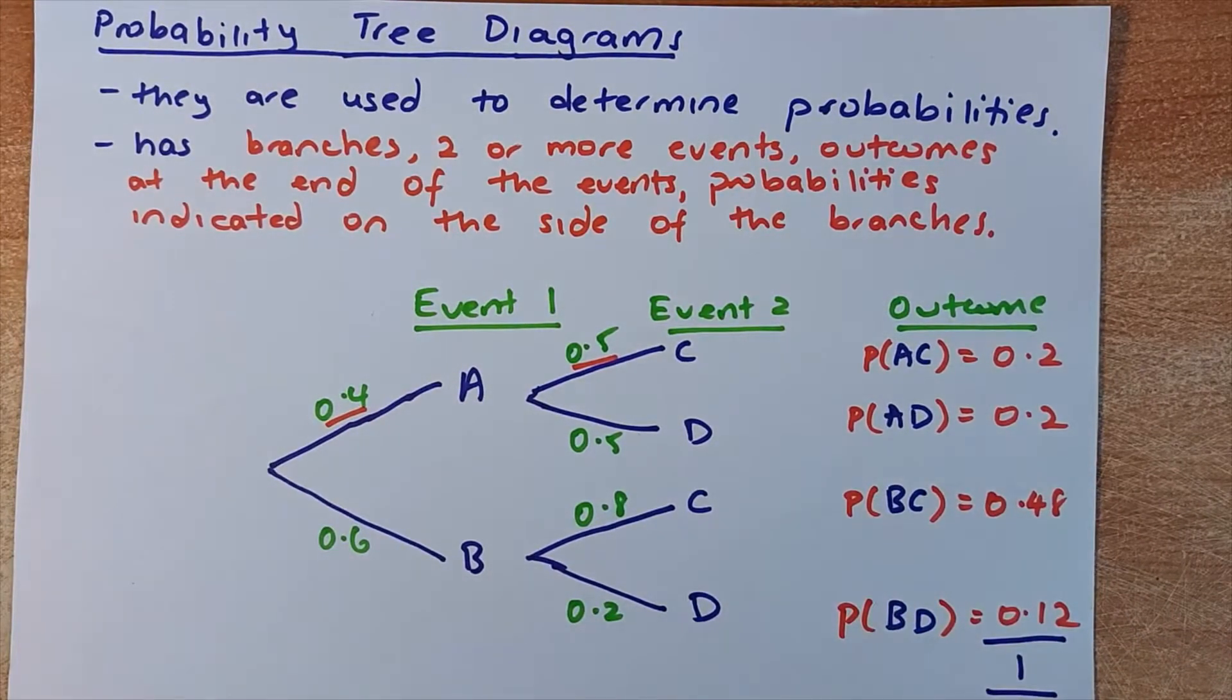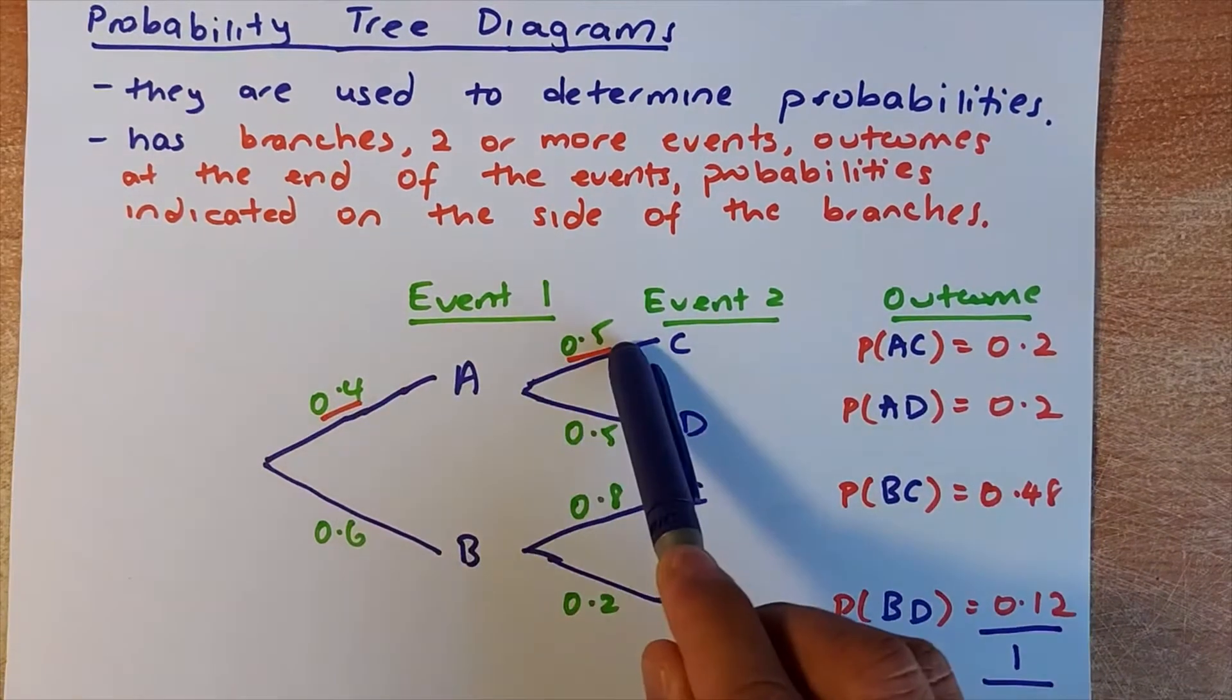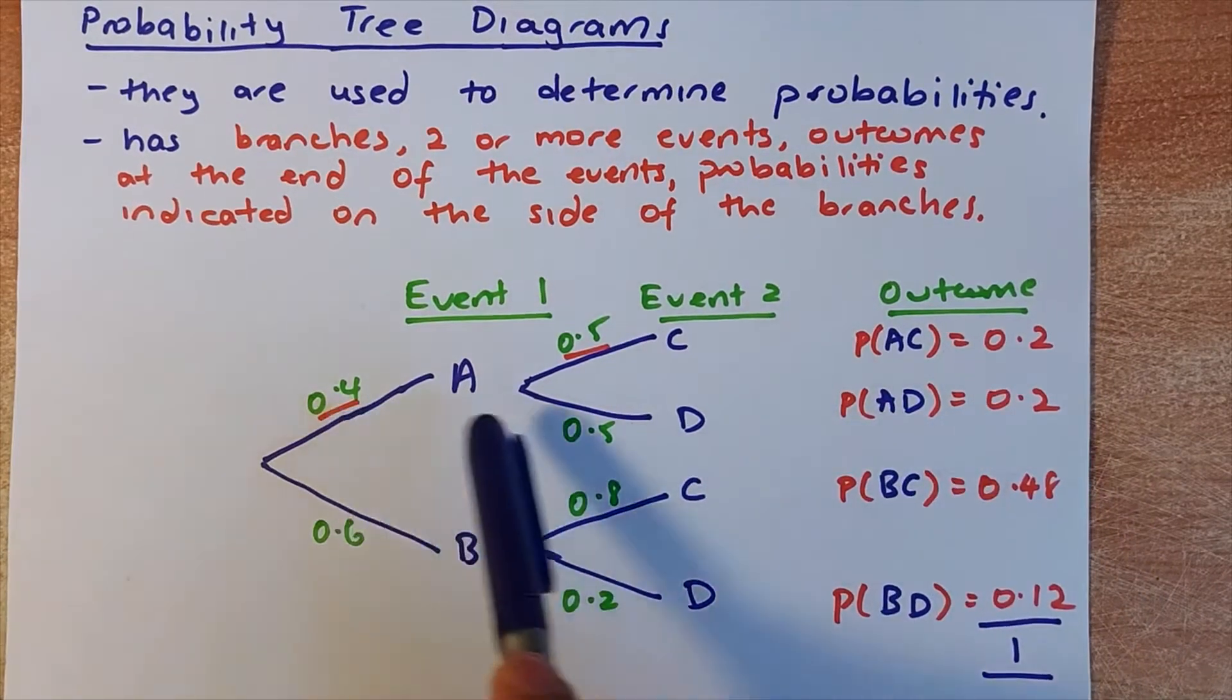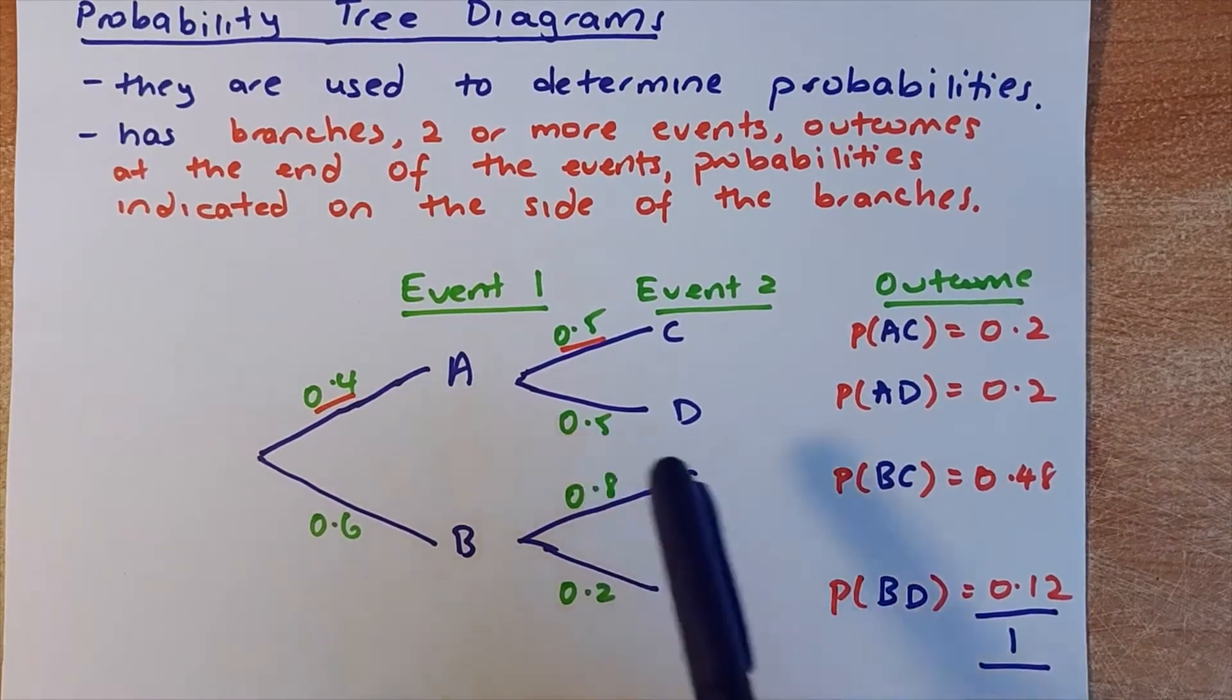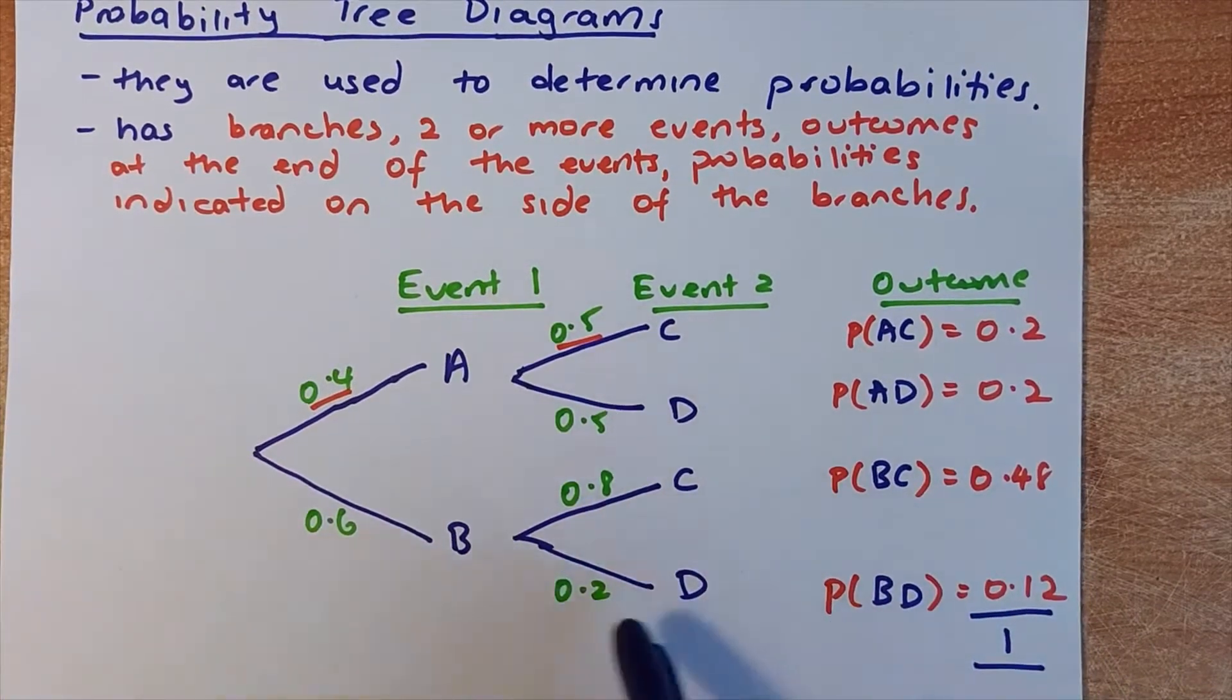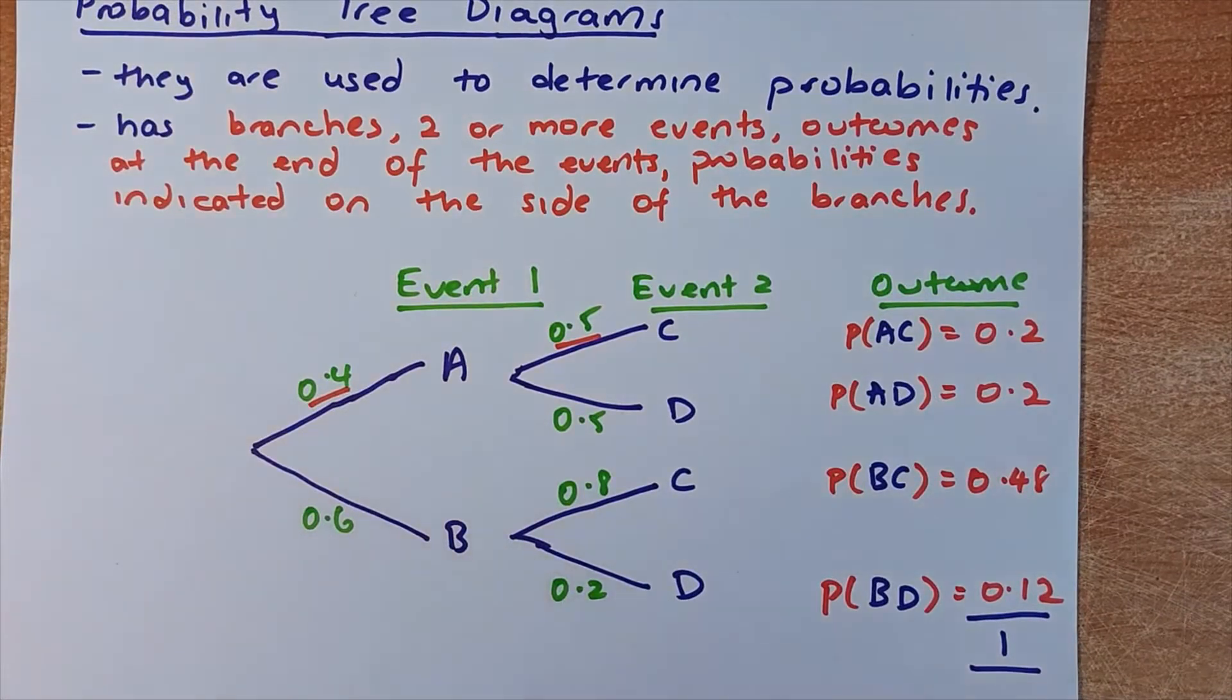So I repeat again. If you want to get the probability of the outcome AC, you multiply this number with that number. And if you want to get AD, you multiply 0.4 with 0.5. If you want to get BC, 0.6 times 0.8. And to get BD, you multiply 0.6 times 0.2.